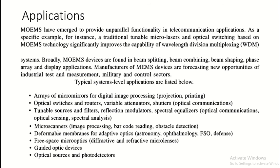More applications include micro scanners used for barcode reading. When purchasing a product and billing on a digital platform, barcodes are scanned to get information. Many robotic devices and other systems have obstacle detection systems based on micro scanners. Deformable membranes are used for adaptive optics, which can be utilized for astronomy, ophthalmology, free space optics (FSO), and defense systems.